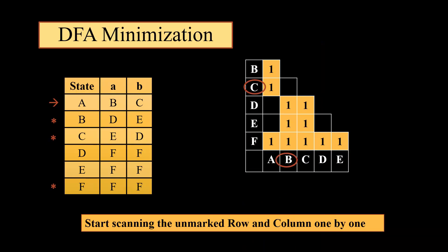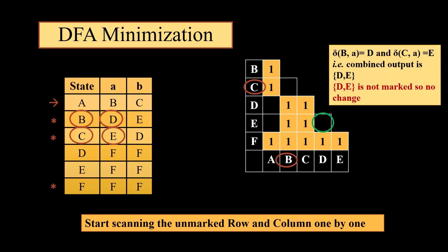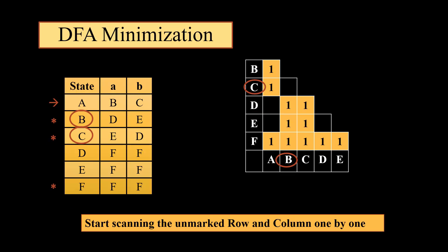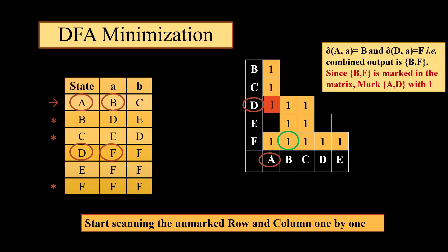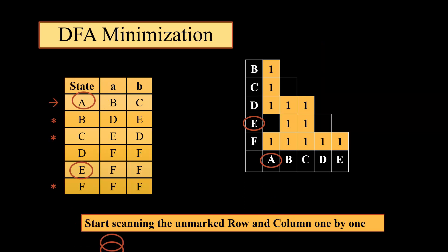Now we move to the second iteration. We recheck BC. BC on A gives us DE, which is unmarked. BC on B gives us ED, which is also unmarked, so BC will remain unmarked — no change. Then we move to AD. AD on A gives us BF; since BF is now marked, we will mark AD. Next we move to AE. AE on A gives us BF; BF is marked, so AE will also be marked.